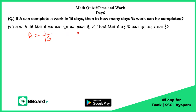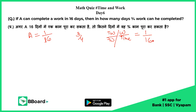Then how many days will he take to complete 3/4 work? We know that speed equals total work upon total time, i.e., work upon time. So A's speed is 1/16, and now at this same speed, A will do 3/4 work — we have to find in how much time.